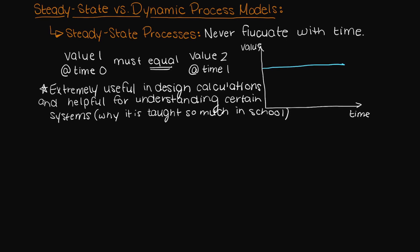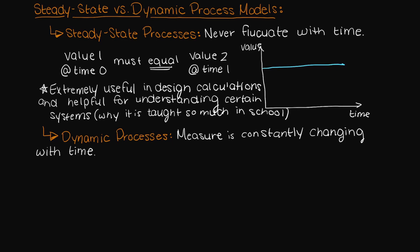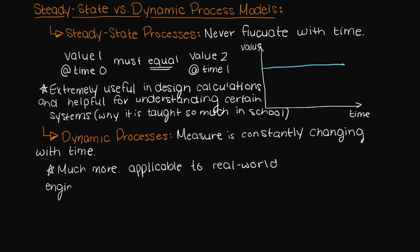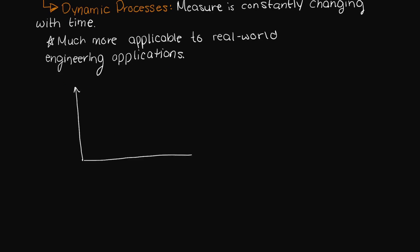But what about a dynamic system? Well, dynamic means constant change, so our measure — whatever that may be — is constantly changing or fluctuating with time. These are much more applicable to real world engineering applications, even where you may not expect them.